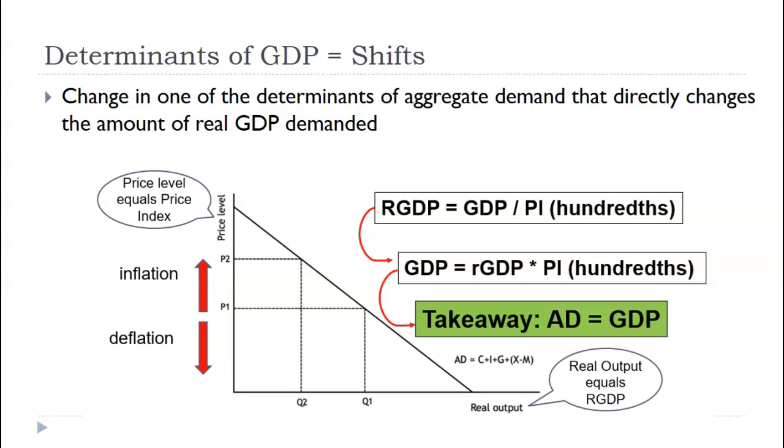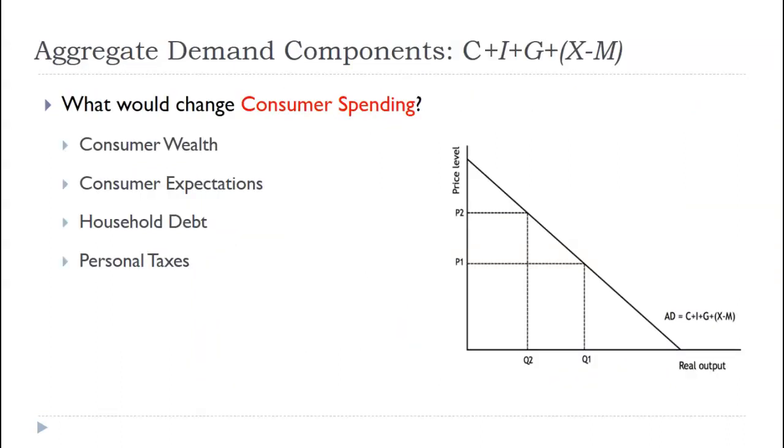Next, we're going to go into the determinants. Meaning, if the price level stayed the same, what would change the aggregate demand curve, a.k.a. You can see it in green here. What would change the GDP? The nice part is, we've already talked about this. It's the expenditure approach. C plus I plus G plus net export. So, if any one of those categories changes, then the nominal GDP has changed. And, again, nominal GDP equals aggregate demand. So, consumer spending.